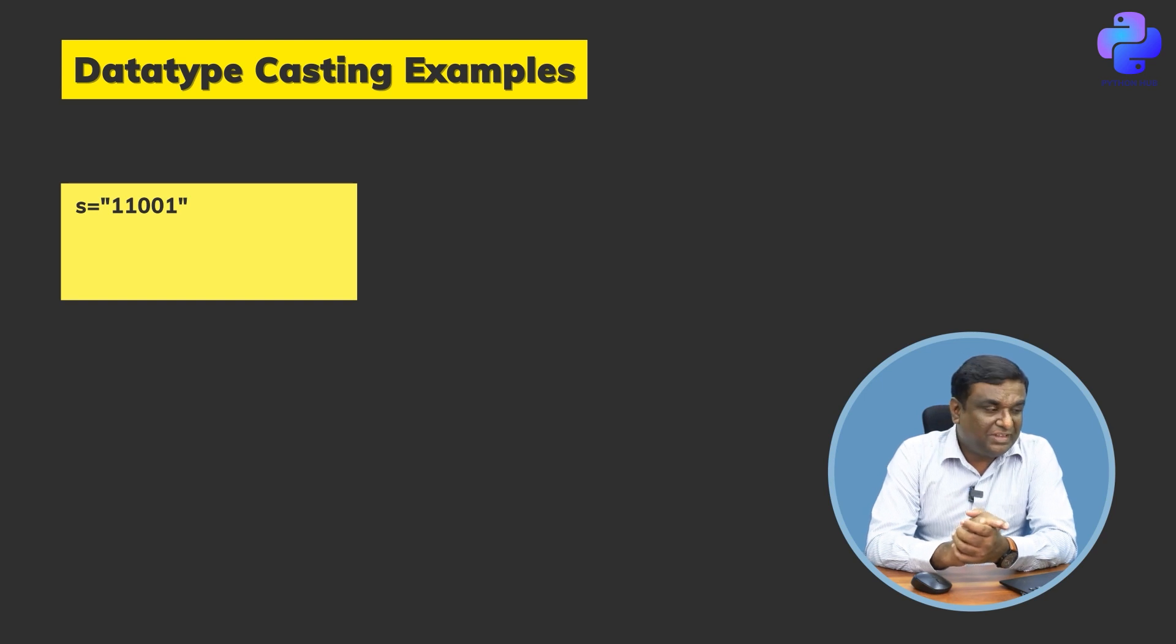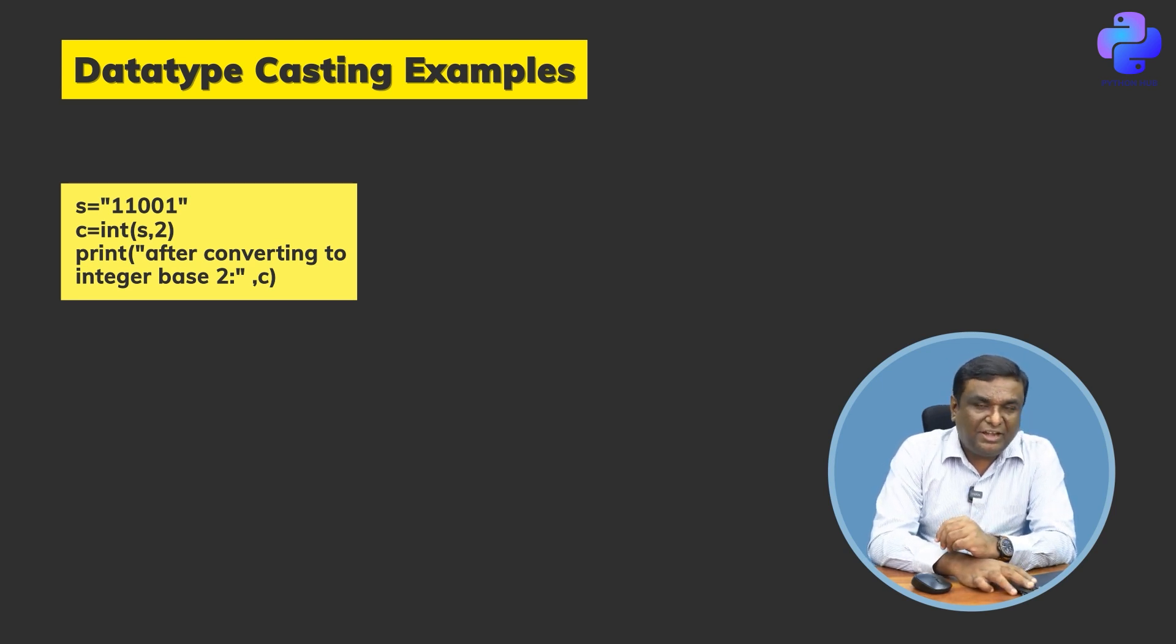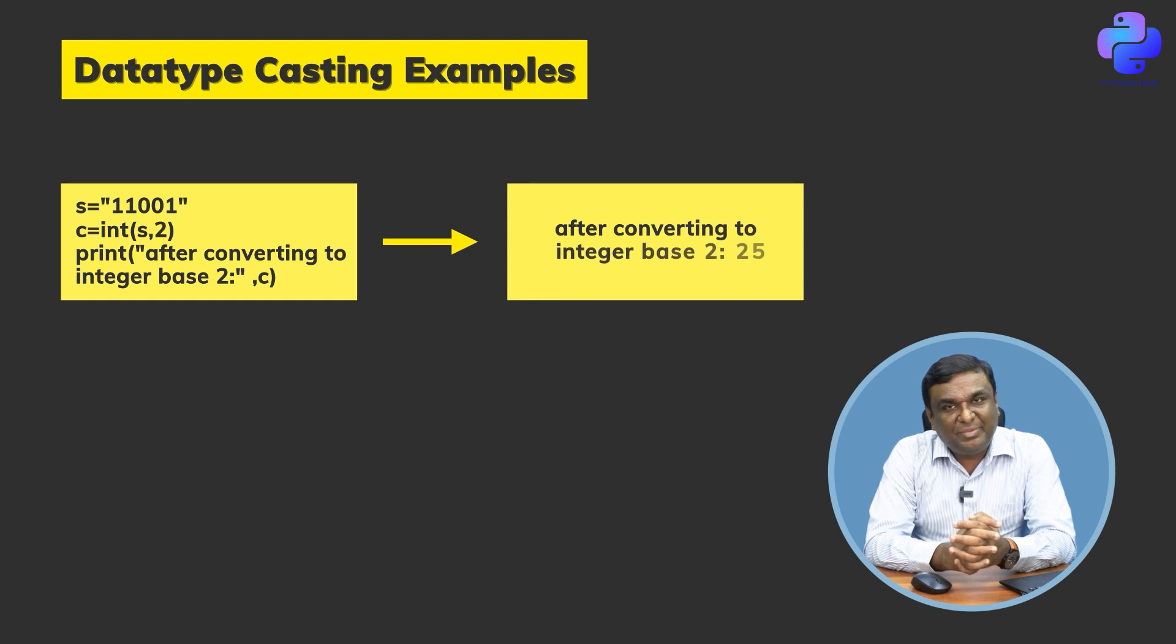Is it a string or an integer? It's a string since we're putting it in quotation. Now I'm converting it to integer. I'm saying c = int(s, 2). When I print this after converting to integer base, what value am I going to get? Let's check that out. After converting to integer base, the value comes out as 25. That is the value c stores.